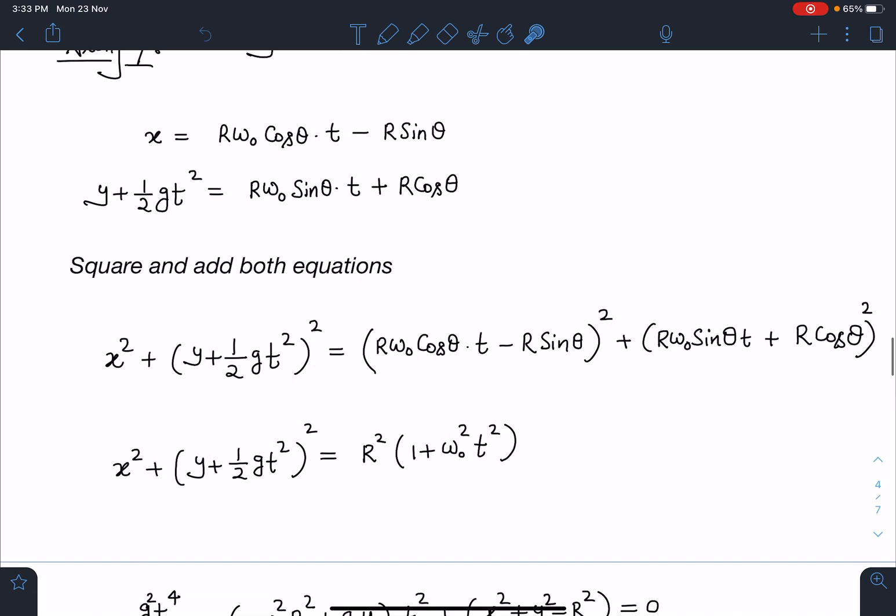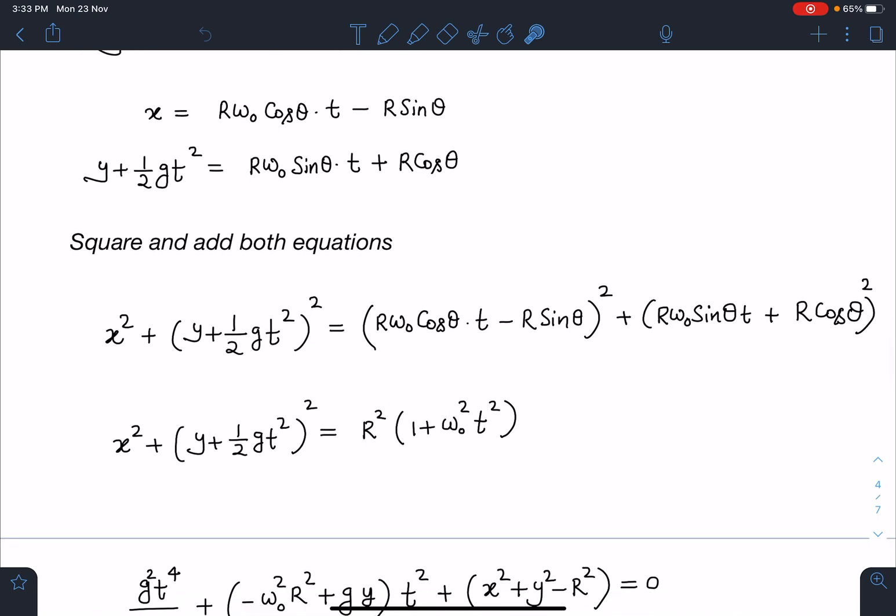You will see here few terms are going to get cancelled and cos²θ + sin²θ is going to become one. From here you will get cos²θ term and from here sin²θ term that will become one. Similarly, R² sin²θ and R² cos²θ will give you R². That 2ab part is going to get cancelled.